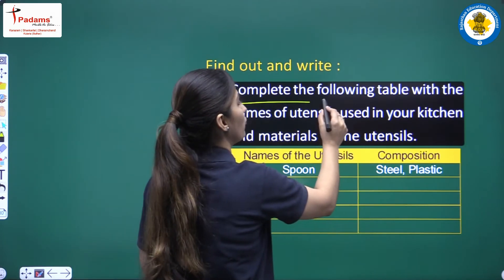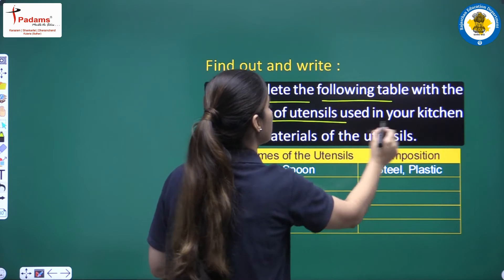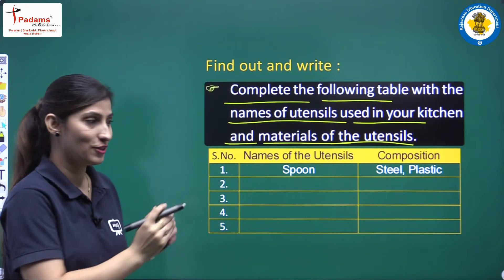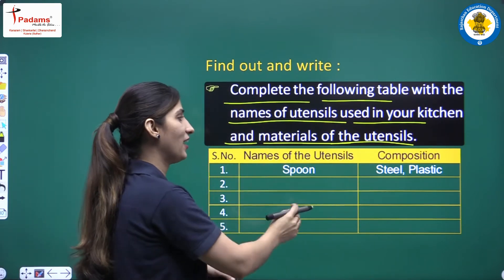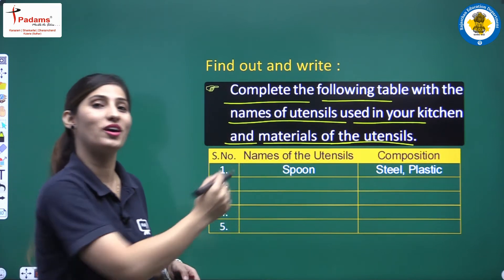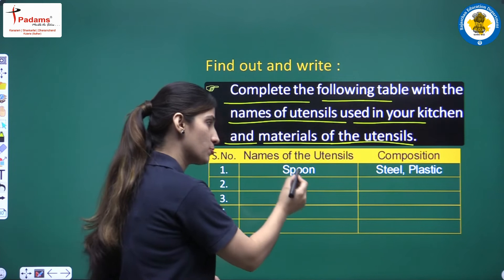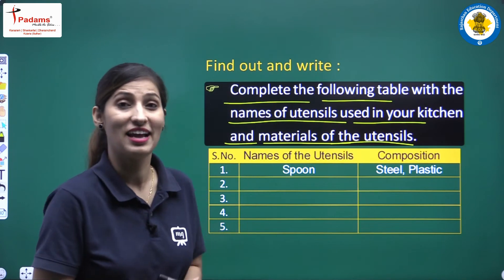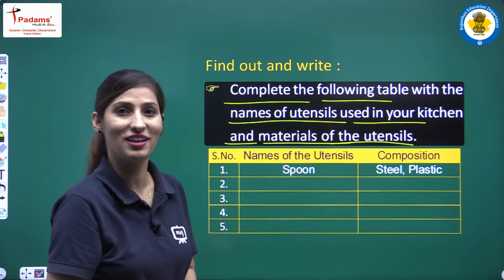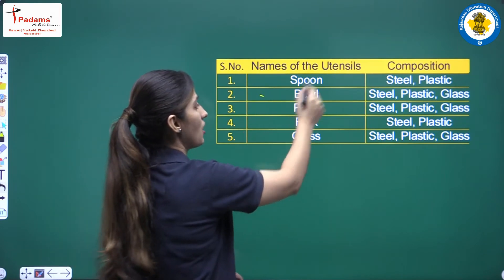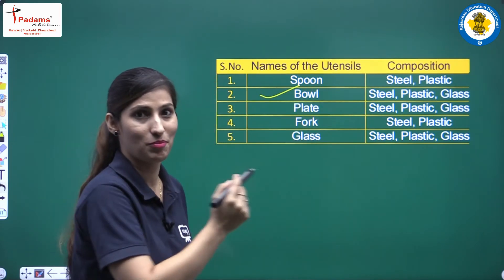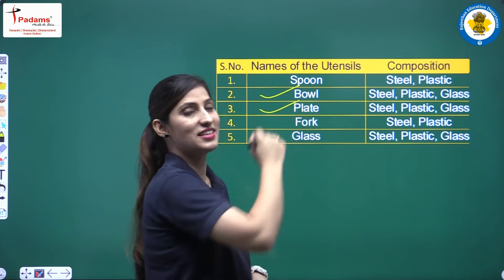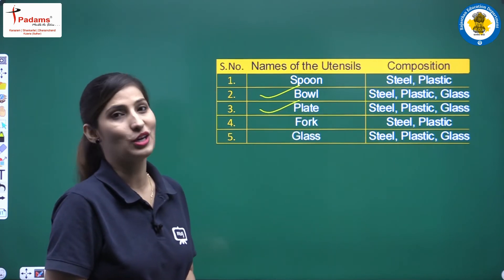Our next question is: complete the following table with the names of utensils used in your kitchen and the materials they are made of. We have to write the utensil name and its composition. For example, a spoon — it can be steel or plastic. A bowl can be steel, plastic, or glass. A plate — steel, plastic, or glass. A fork, used to eat noodles and maggi — steel or plastic. A glass used for drinking water or any liquid — steel, plastic, or glass.